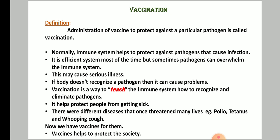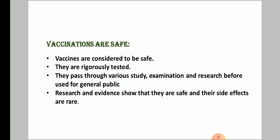Today we have the threat of coronavirus, and we still don't have a vaccine for it. If infected, the immune system cannot recognize the pathogen, causing serious illness or even death. There were many diseases that once threatened many lives — for example, polio, tetanus, and whooping cough — but now we have vaccines for them. So maybe in the future we will also have a vaccine for coronavirus. Vaccines help protect society.